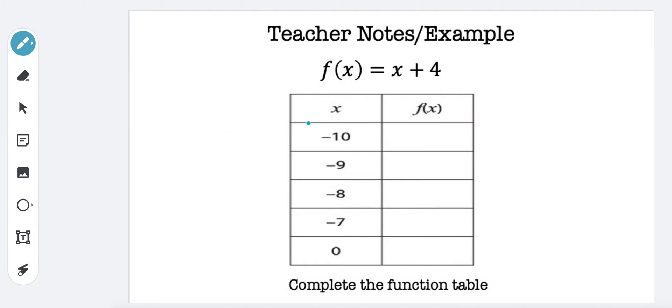And we know the function is going to be f of x equals x plus 4. Remember, f of x really just means y. So these are the inputs and then these are going to be the outputs.